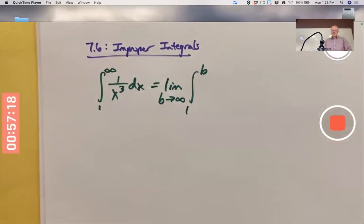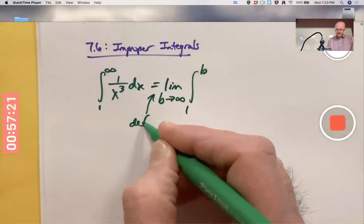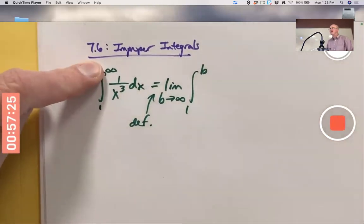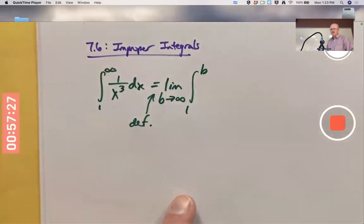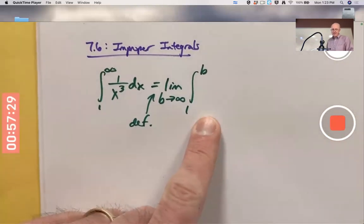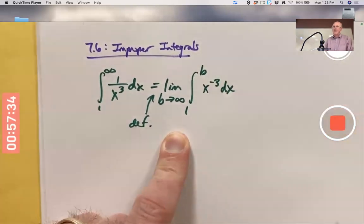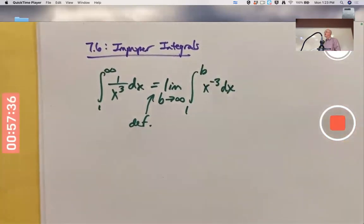So this is a definition. By definition, this improper integral with the infinity sign up there is a limit of proper integrals of the same function, which I'll write as x to the negative 3, so it's a little easier to integrate, as the upper limit of the integral goes to infinity.